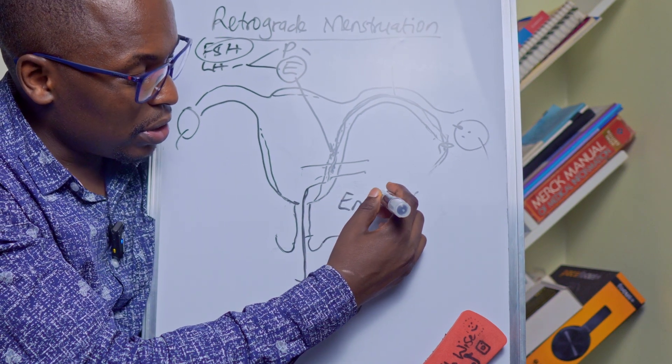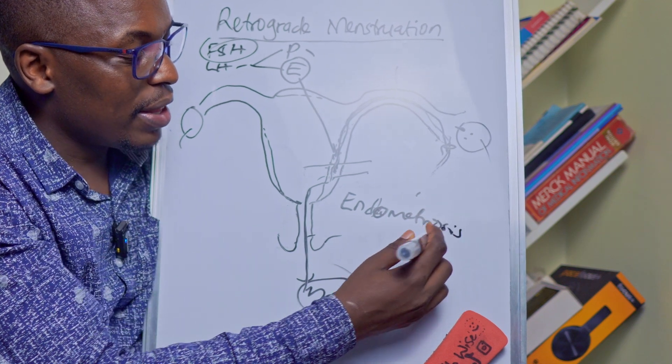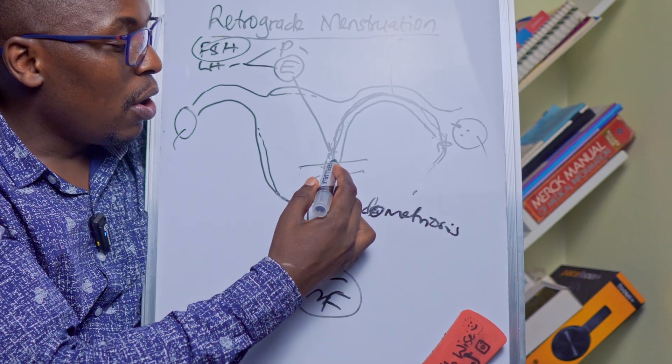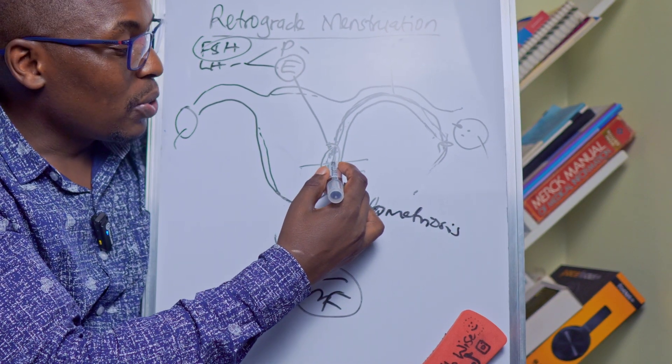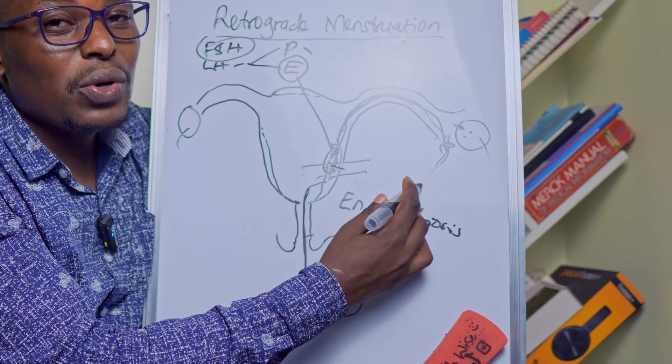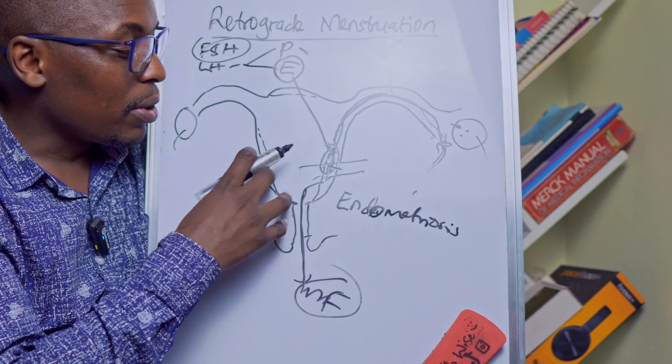And this is where you're going to find what we call endometriosis. This is the growth of the endometrial wall, so this tissue here growing in other regions of the body, especially the abdominal cavity, because this is where it's more prone, although the cells can grow almost anywhere in the body.